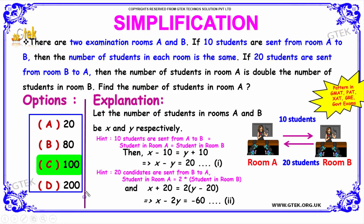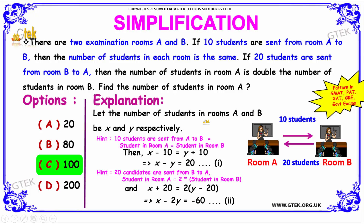The solution for this problem: from the given question, let us assume the number of students in room A and room B as X and Y respectively.